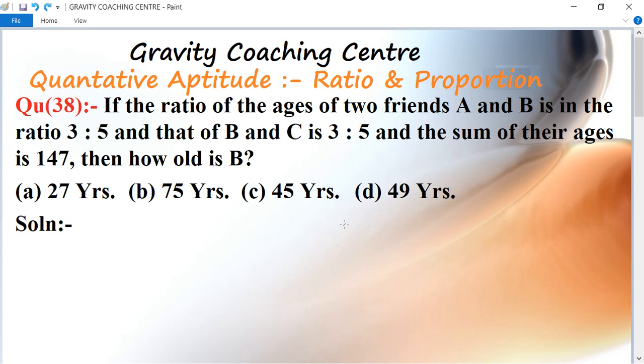In this question the ratio of the first two friends A and B whose ratio is given 3 is to 5, and the friend B and C whose ratio is 3 is to 5, and their total is 147.